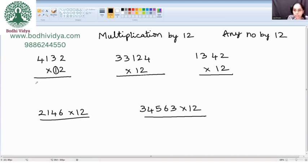1 into 4 is how much? 4. Now, 2 into 4 is how much? 8. We need to add it with the consecutive number. 8 plus 1 is how much? 9. Now, 2 into 1 is how much? 2. Add it with the consecutive number. 2 plus 3 is how much? 5.